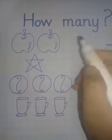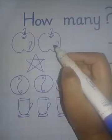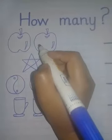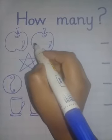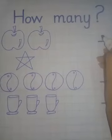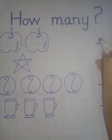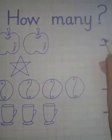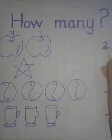So first of all, here are the apples. Count with me. One, two. Again count with me. One, two. So I am going to write two in front of two apples. So look at my hand. First make a round, then come down and then turn to the right side.